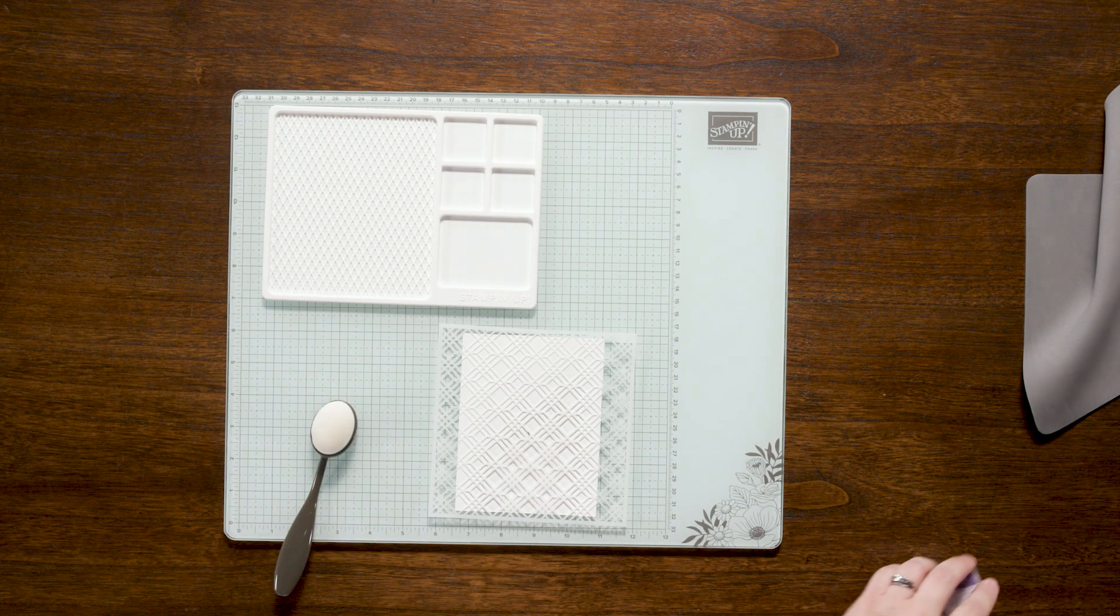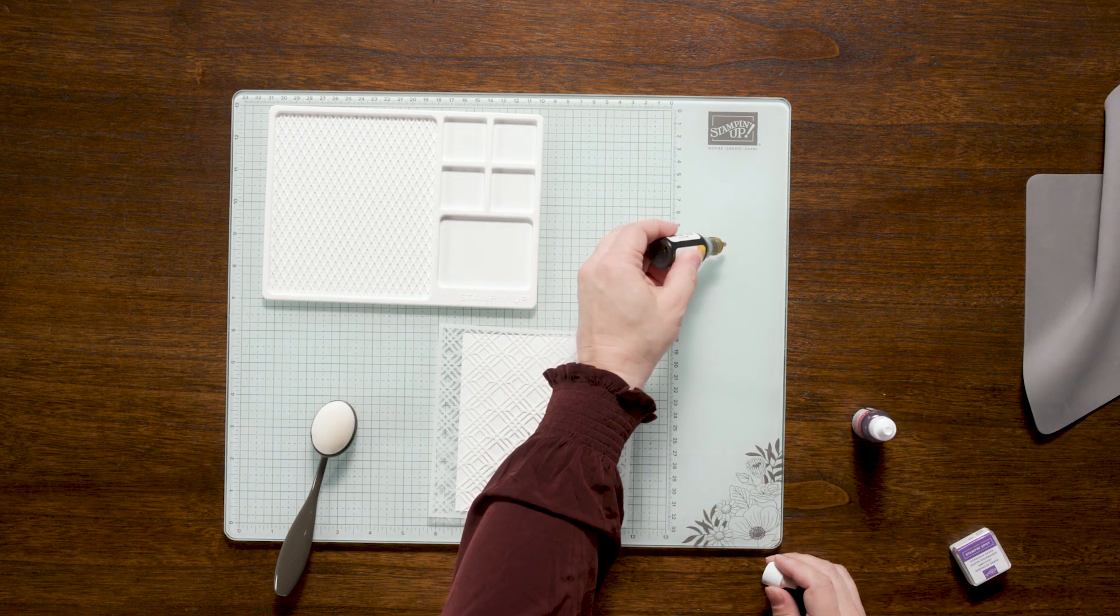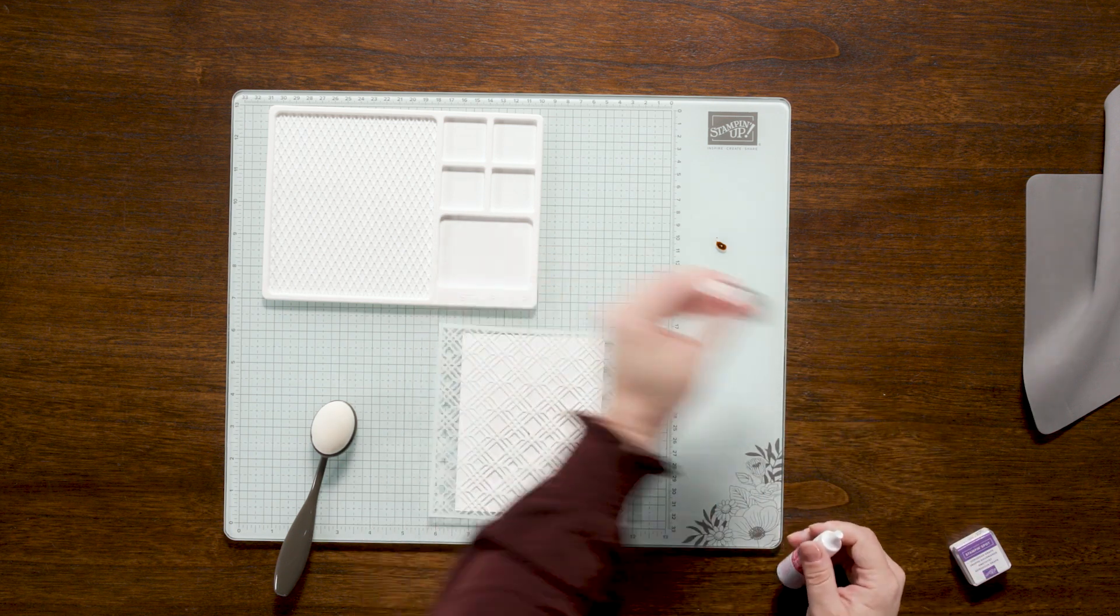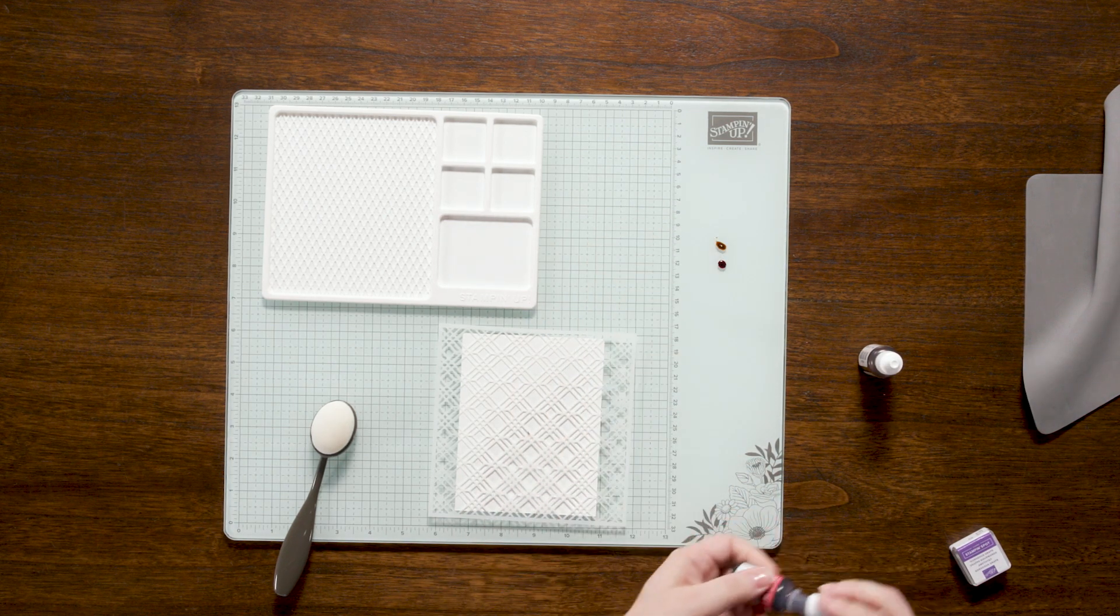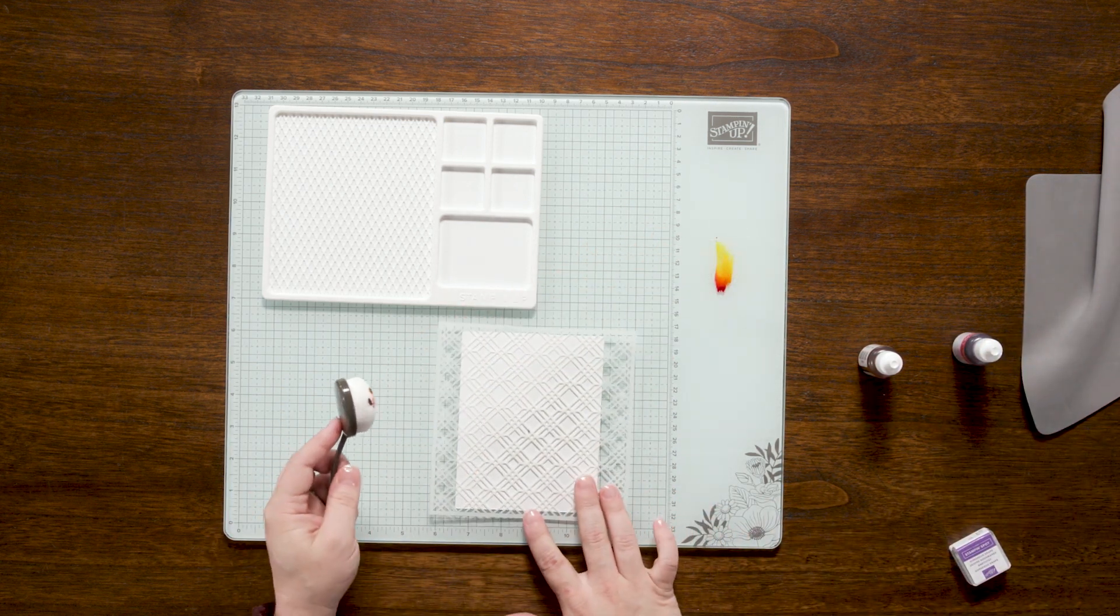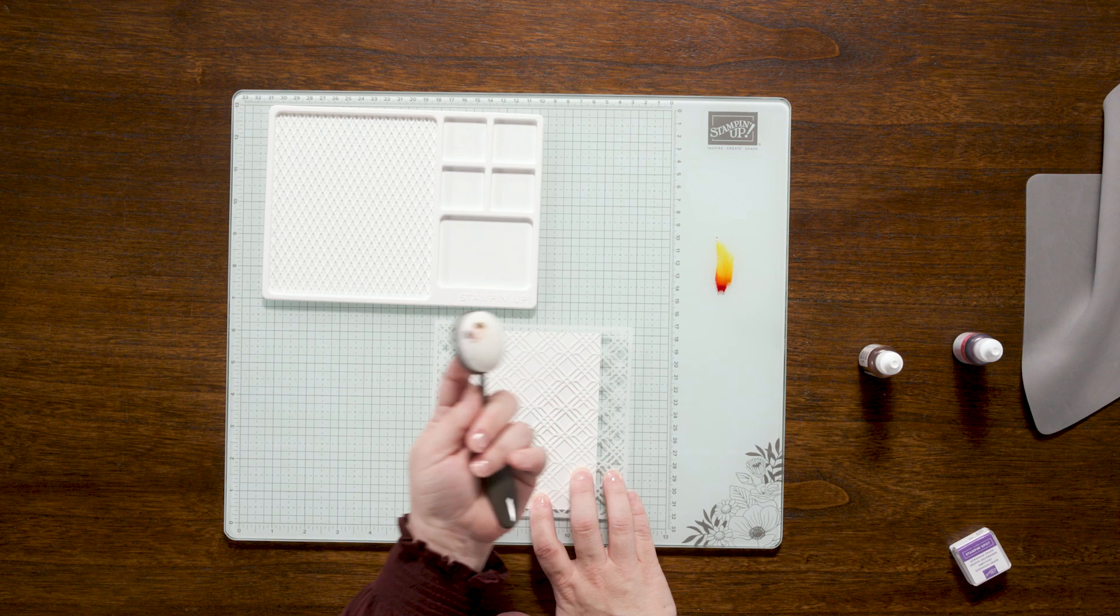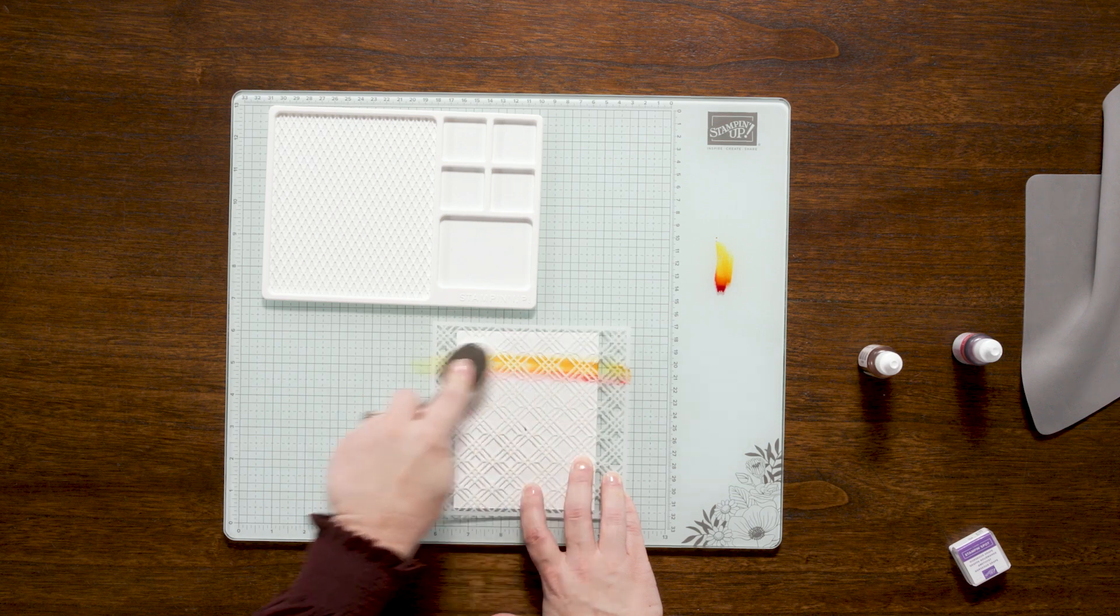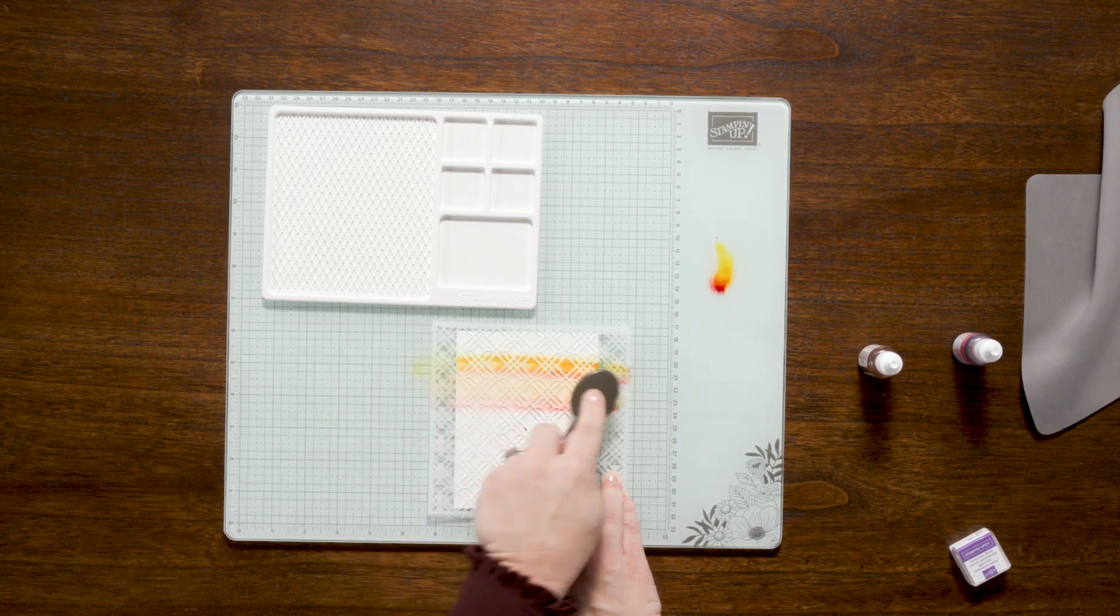And maybe while you're getting those open, I'll show how you can use the re-inkers on this. So we're going to try and do a gradient here. See how this goes. One thing with blending brushes is you want to be able to start off the paper, so that's why this mat is going to come in handy. I'm kind of liking that. Carly, what do you think? That looks super pretty. Kind of get a little sunset action there. All right, let's see.